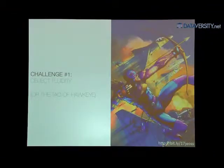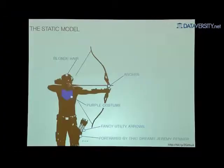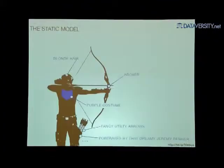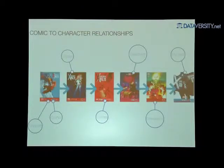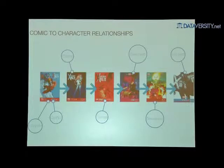I'm going to talk about a couple of specific challenges in modeling this. The first is what I call object fluidity or character fluidity — the Tao of Hawkeye. For a long time, we thought of characters as basically static entities — an entity that doesn't change. Hawkeye, if you saw the Avengers, was the Jeremy Renner character — he has blonde hair, he's an archer, he has a purple costume. We conceived of these as a static set of attributes, and then relationally we can tie these static entities to products, comics, TV show episodes.